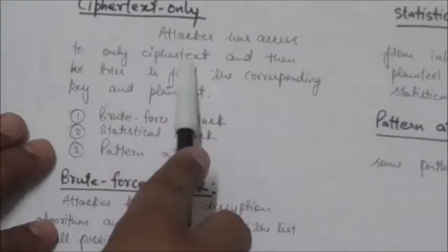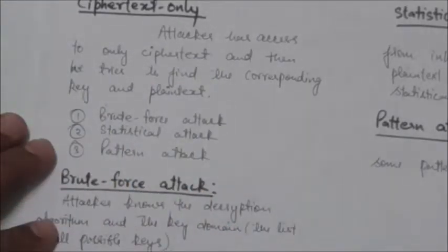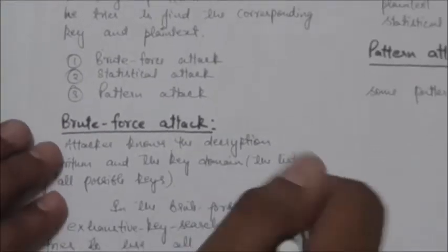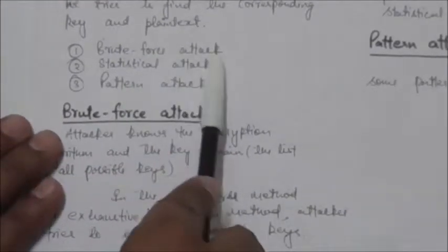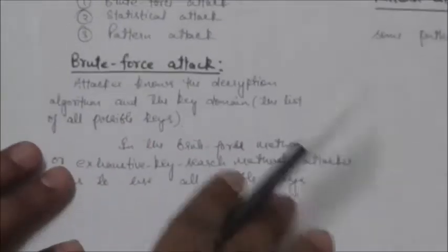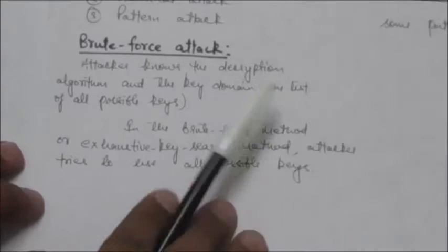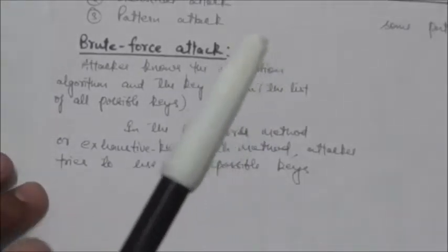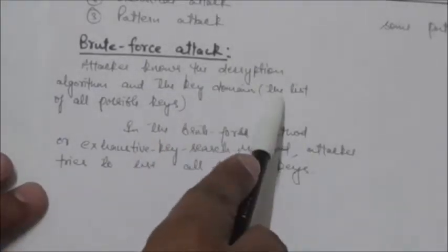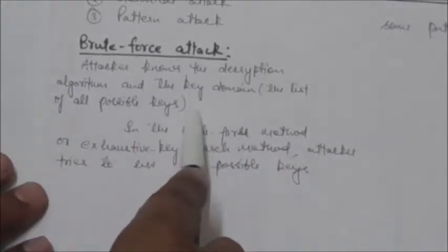Some methods which can be used in a ciphertext only attack are brute force attack, statistical attack, and pattern attack. In a brute force attack, it is assumed that the attacker knows the decryption algorithm and the key domain — that is, the list of all possible keys.